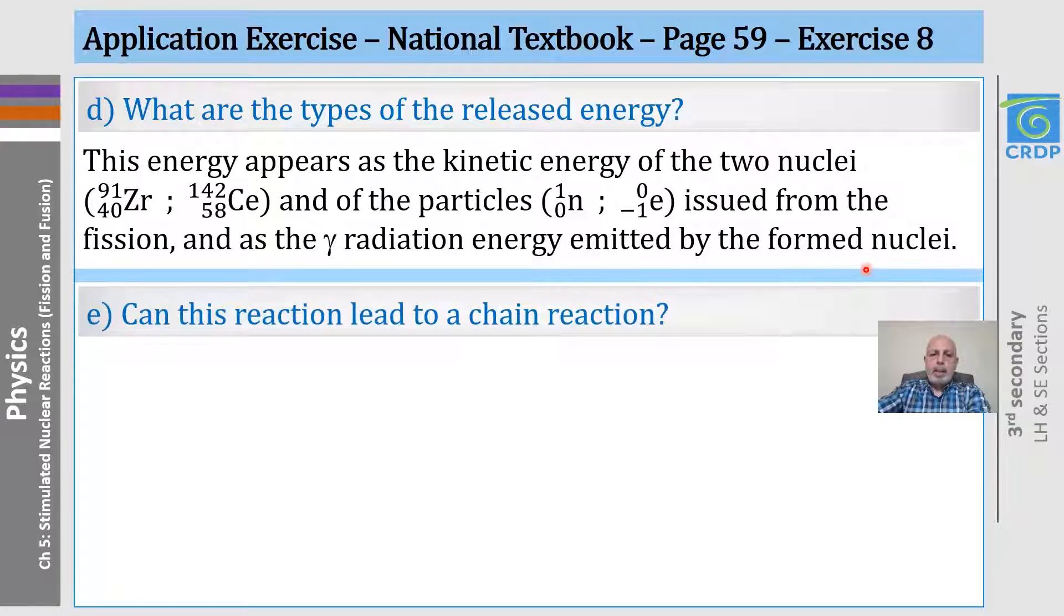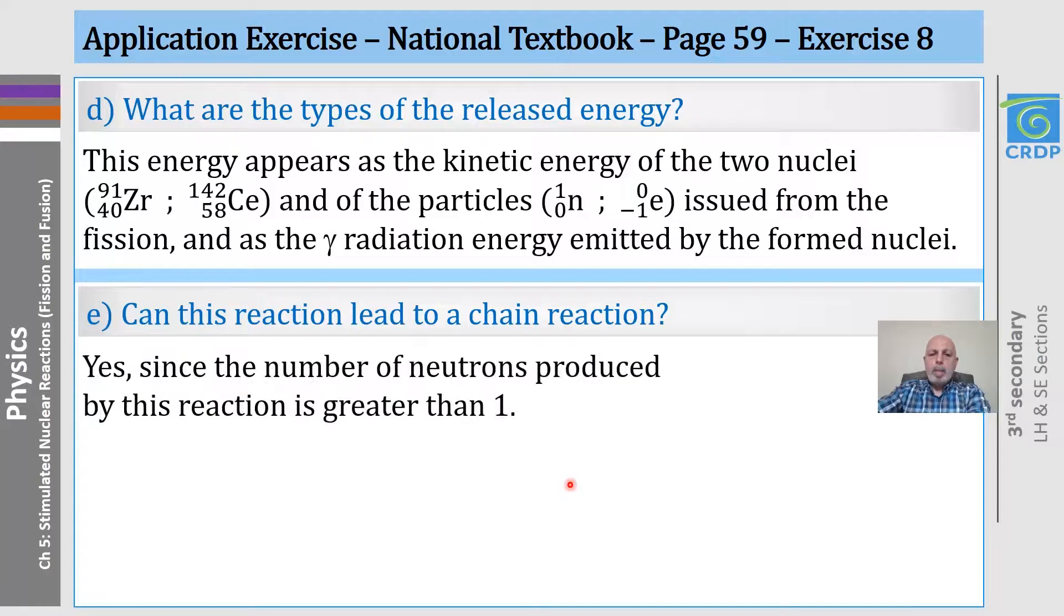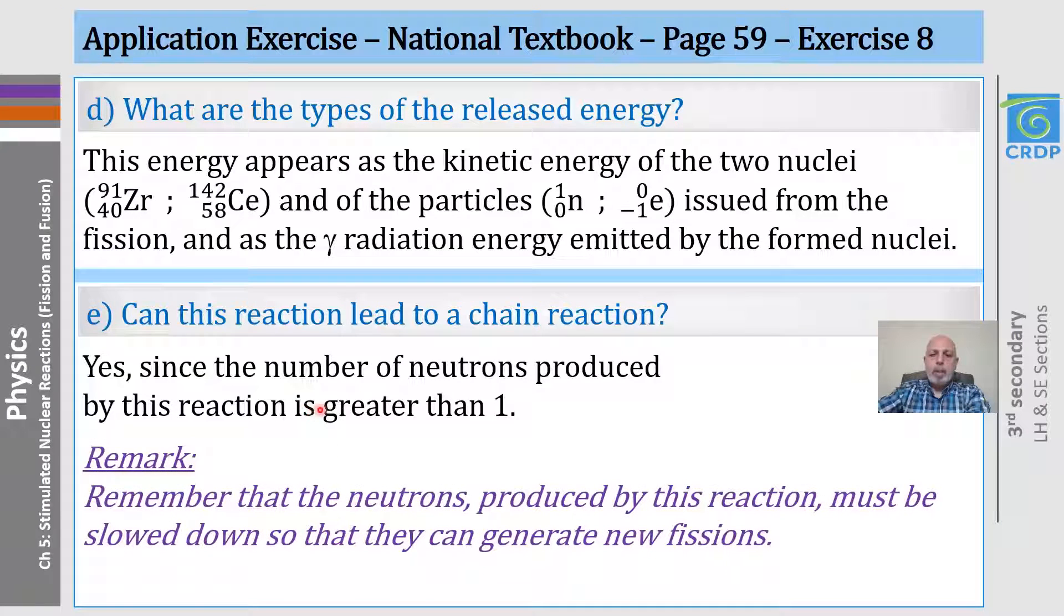Can this reaction lead to a chain reaction? Yes, because the number of neutrons produced by this reaction is greater than one. Of course, I want to remind you that these neutrons should be slowed down so they can generate new fissions.